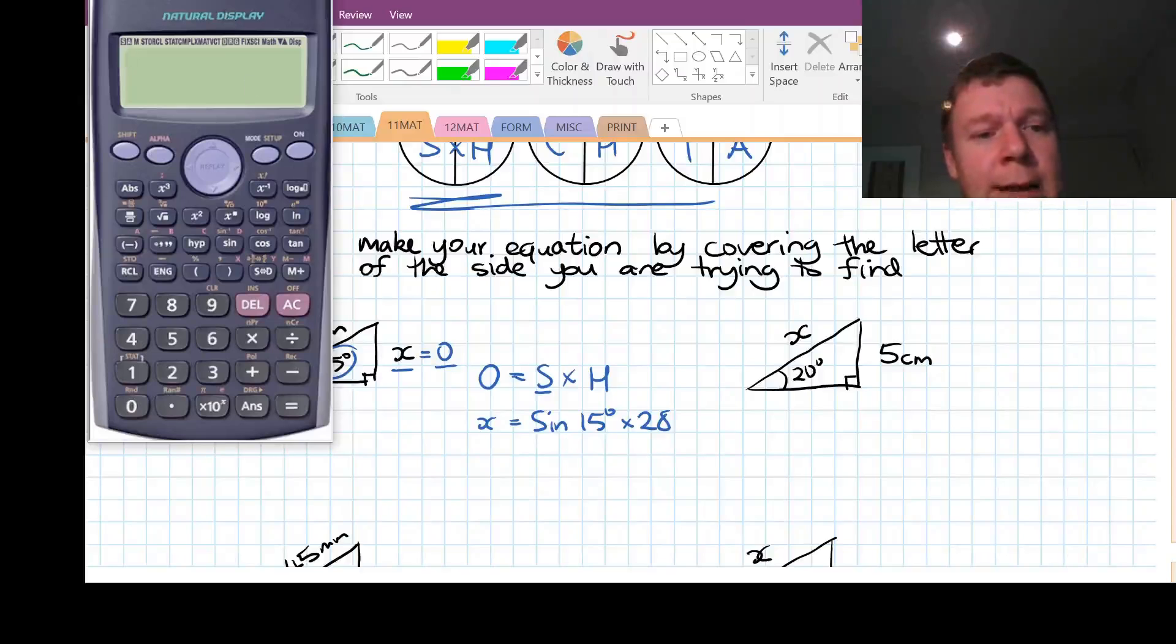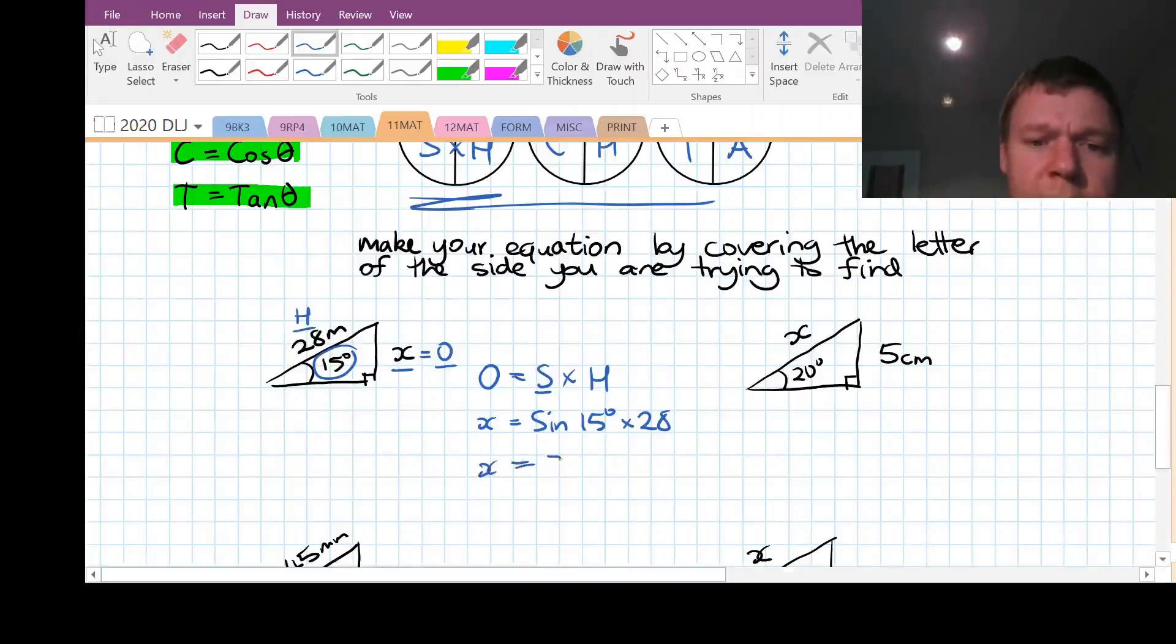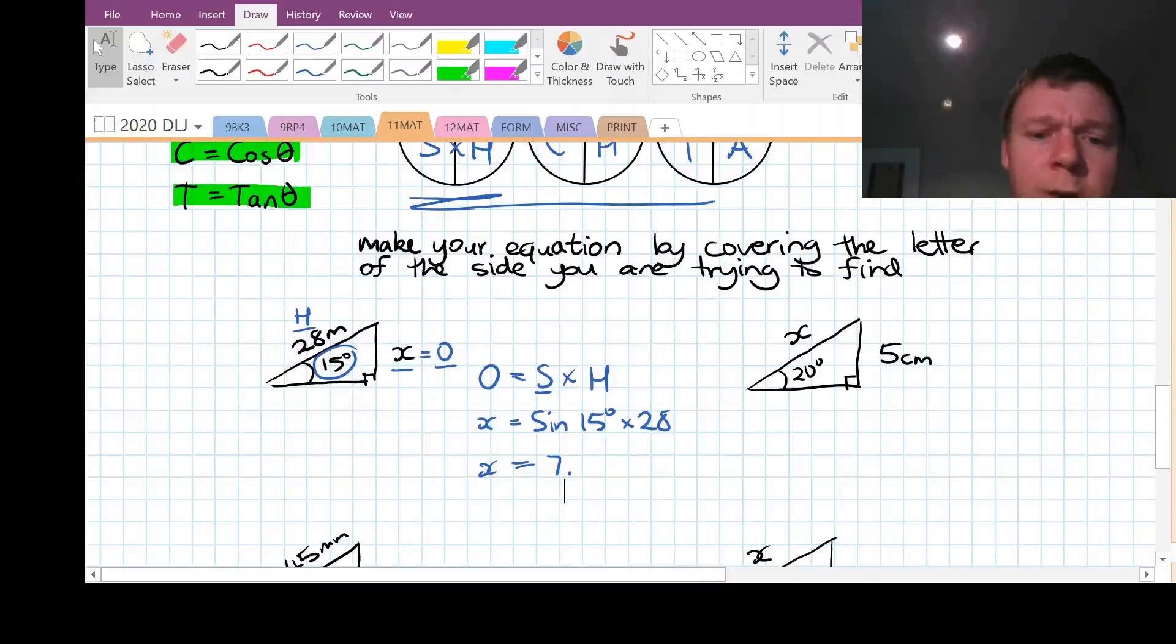Okay. Moving on. Now we're going to actually put that into our calculator. So sine 15, close the bracket, multiplied by 28, equals, and then we want to press this button because that changes it back into a decimal. So our answer, 7.24, or 7.25 if we round it up. We'll just do two decimal places today. So x in our trigonometry problem is 7.25 meters.